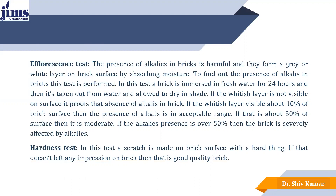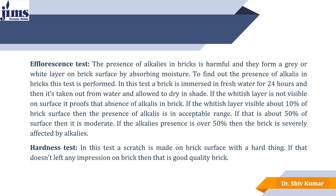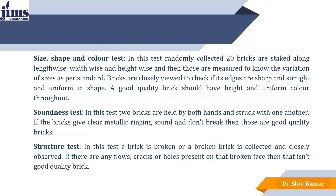Next is the hardness test. This is the simplest test and can be done by nail scratch. If a nail leaves any impression on the brick, then the quality of the brick is underrated. Next, size, shape and color test: randomly collected bricks are stacked lengthwise, widthwise and heightwise, then measured to know the variation in sizes as per IS standard. Bricks are closely viewed to check if edges are sharp, straight and uniform in shape. A good quality brick should have bright and uniform color throughout. Next is the soundness test: two bricks are held in both hands and struck against one another. If the bricks give a clear metallic ringing sound, it means the bricks are of good quality.